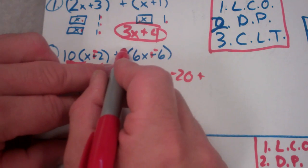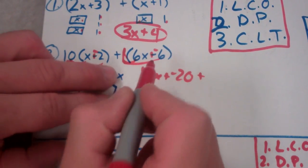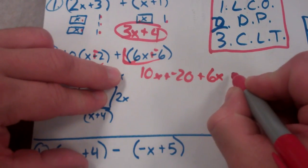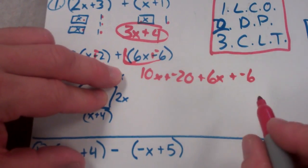Plus, I have an understood 1 right there. So I'm going to go ahead and distribute it because that really just breaks them out of jail. So I would end up with plus 6x's plus negative 6. And then combine like terms.